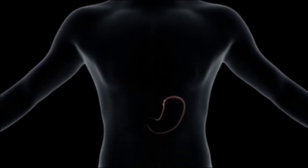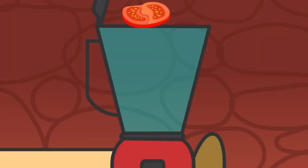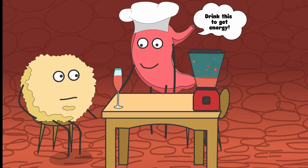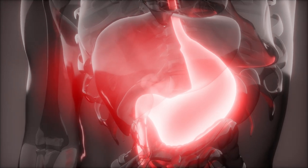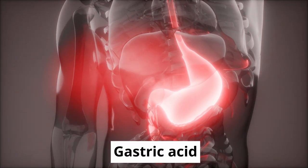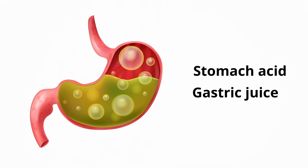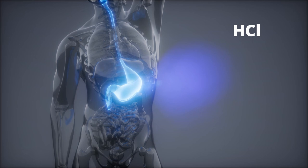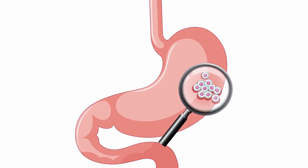The stomach is where all the stuff we eat goes to be digested. It secretes a number of acidic juices and enzymes that help break down the food, deriving energy in the process. One of the most interesting substances in the stomach is gastric acid, also referred to as stomach acid or gastric juice. It is a digestive fluid that forms in the stomach and consists of hydrochloric acid, sodium chloride, and potassium chloride.